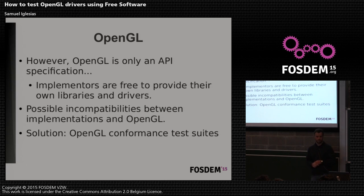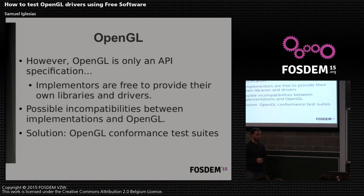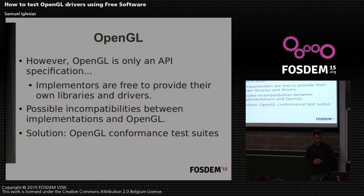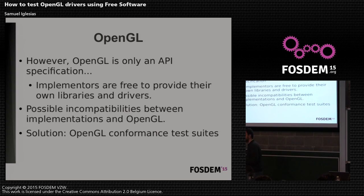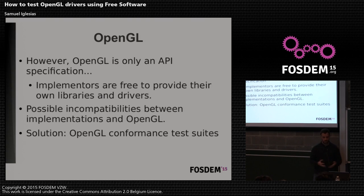As I said, OpenGL is only an API specification. The implementers — for example, NVIDIA, Intel, or in the open source world, Mesa, or any other open source driver — are free to provide their own libraries and their own kernel drivers and so on. So there could be incompatibilities between those implementations and the OpenGL standard. To check if these drivers are following the OpenGL standard, there are OpenGL conformance test suites.